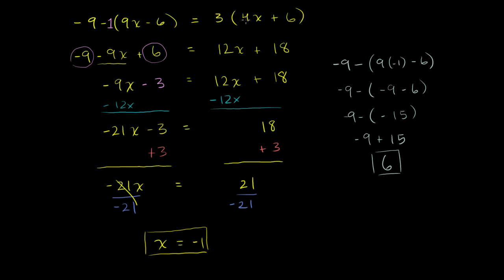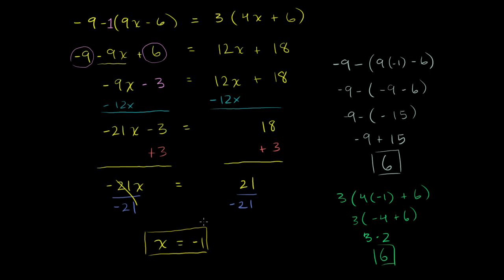Now let's check the right-hand side. We get 3 times 4 times negative 1 plus 6. That's 3 times negative 4 plus 6. Negative 4 plus 6 is 2, so it's 3 times 2, which is also 6. So when x equals negative 1, the left-hand side is 6 and the right-hand side is 6. This definitely works out.